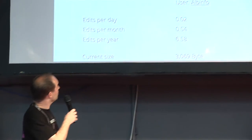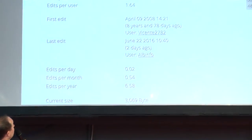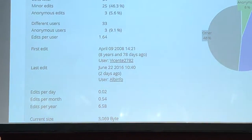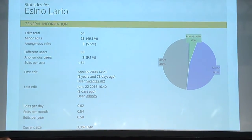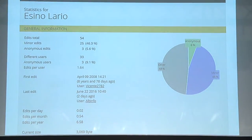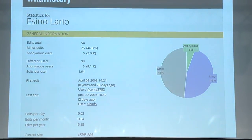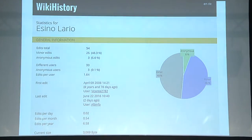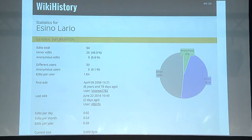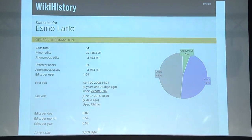Another one I liked a lot — we have a lot of different page counters, but this is the Wiki History. I believe it's only available in German right now, but it might be used in other languages too.